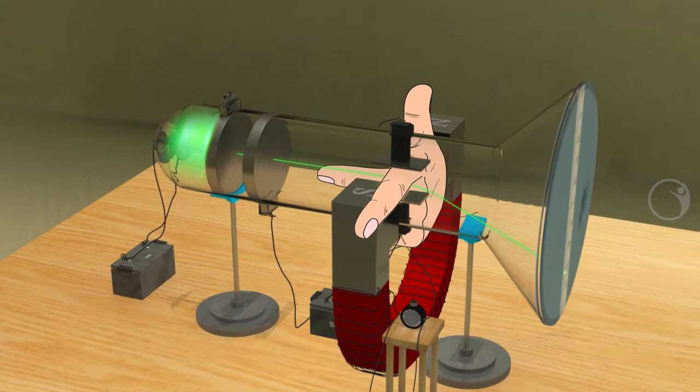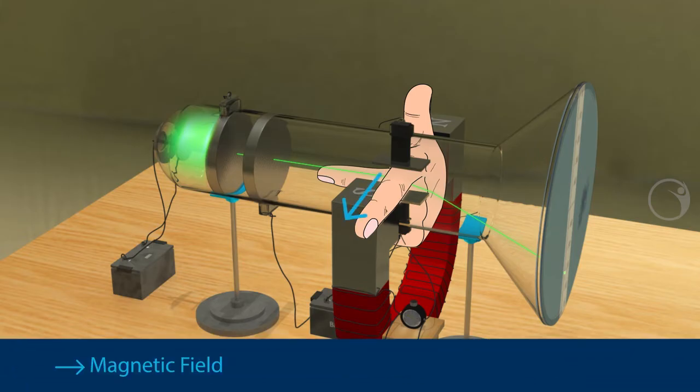Now let's apply Fleming's left hand rule. Let us stretch the three fingers of your left hand perpendicular to each other. If the index finger points to the direction of the magnetic field and if the middle finger points to the direction of the electric current, you must be wondering why it is pointing in the opposite direction to the beam.